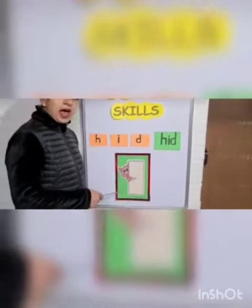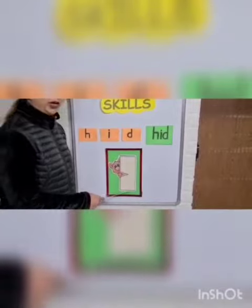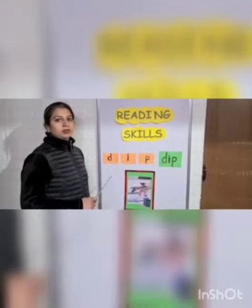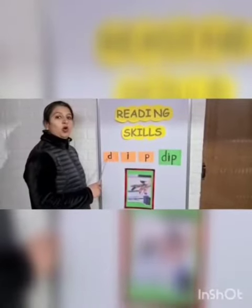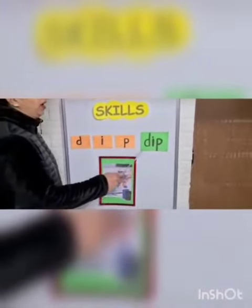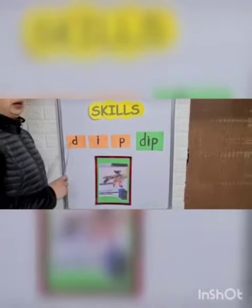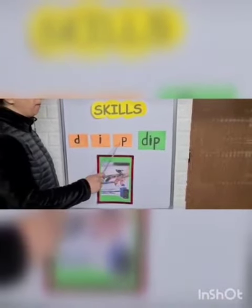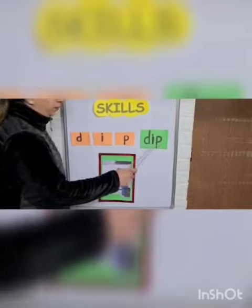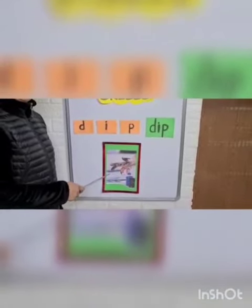The cat hid behind the door. This is lowercase letter D. This is lowercase letter I. And this is lowercase letter P. D, E, P. Dip. D, E, P. Dip. I dip my fingers in the color.